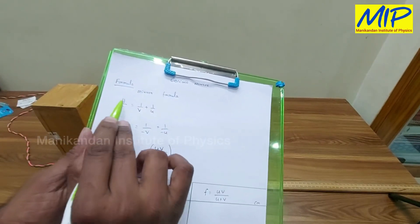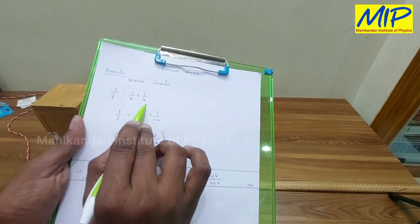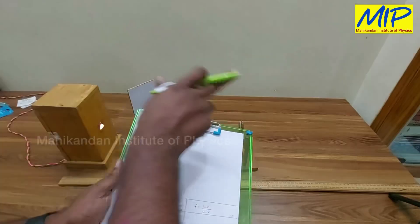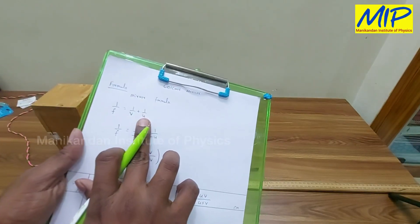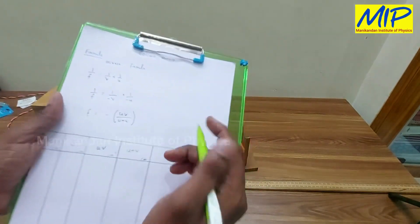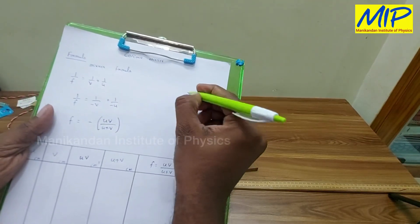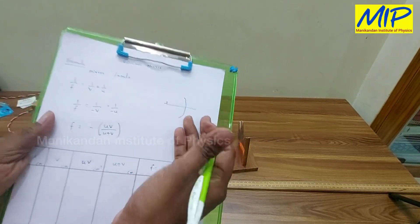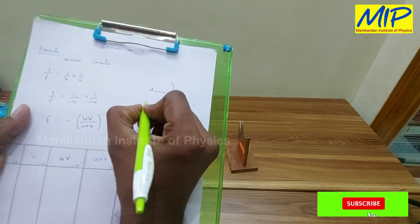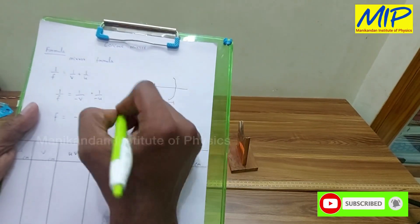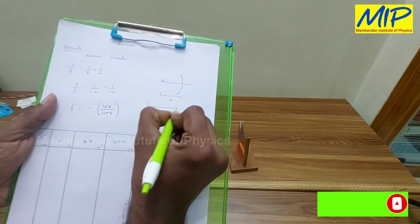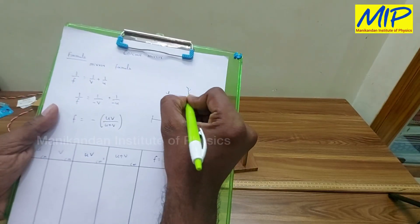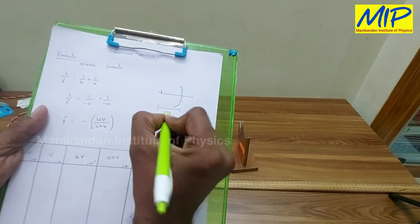Using the mirror formula: 1/f = 1/v + 1/u, where u is the object distance — the distance between the object and the mirror — and v is the image distance. In the case of a mirror, we place the object here and the image is also formed on the left-hand side. Both u and v are on the left side of the mirror, so both values are negative.